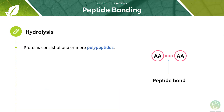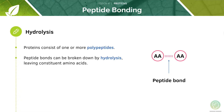Proteins will consist of one or more polypeptides. Peptide bonds can be broken down by hydrolysis reactions, which can break proteins and peptides down to their constituent amino acids.